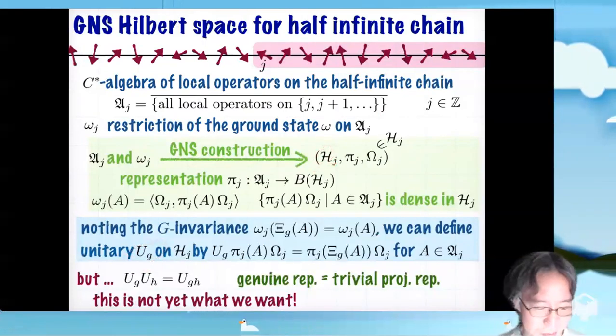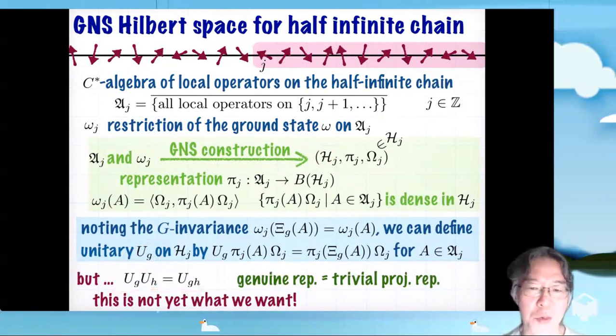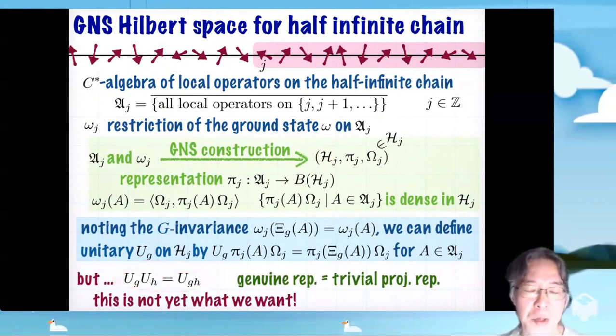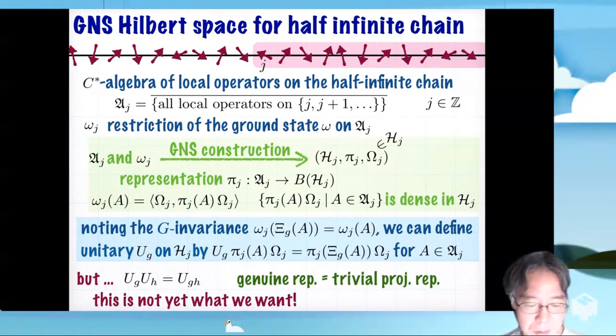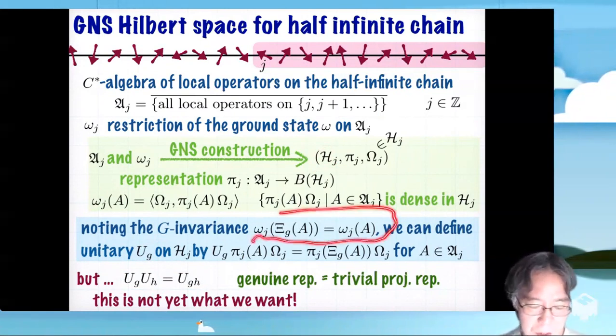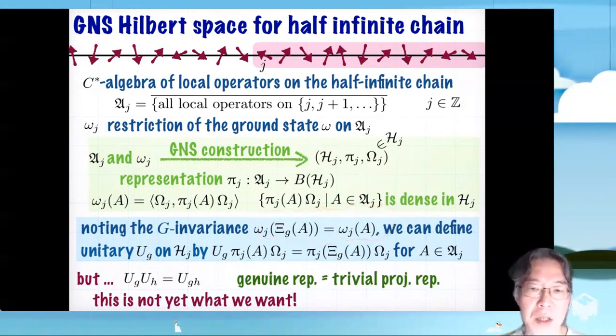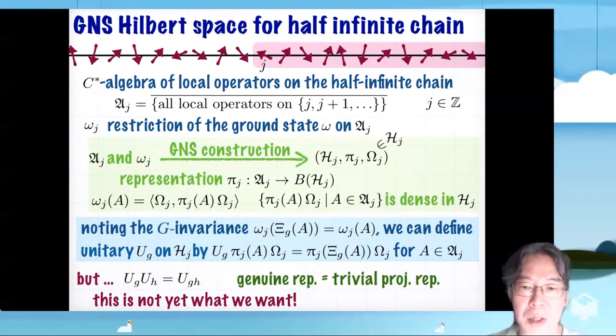You have already seen the punchline, but this is not yet what we want. You can easily show that this U satisfy this relation, so they give a genuine representation of the group G. It's a trivial projective representation. But this is rather natural because we have used the fact that Ω is G invariant, but we have not yet used the fact that Ω is a unique gap ground state.